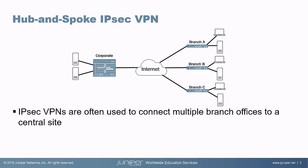So you might ask yourself, what is a hub-and-spoke IPsec VPN? It's basically a set of site-to-site VPNs. However, there is one central site that all the other VPNs have to traverse first to get to the other remote VPN. For example, branch A needs to communicate with branch C — the traffic would go through the corporate device first, then get to branch C.